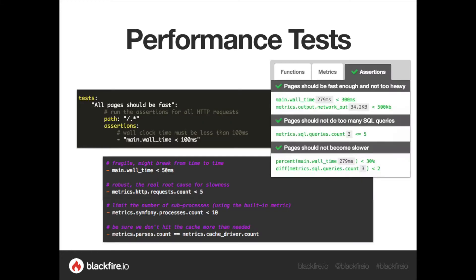When we started Blackfire a year and a half ago, it was mainly a profiler useful for developers on their personal laptops. Version 2, released a month ago, goes further — now we have a solution for all your environments: development, testing, staging, and production. You can write performance tests and assertions on performance metrics. Because we have deep understanding of your code at runtime, we know which library you're using — Symfony, Magento, Drupal, plain PHP, PDO — because we have all the function calls.